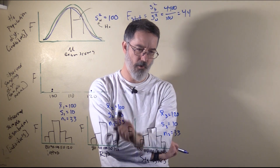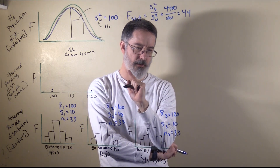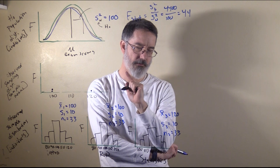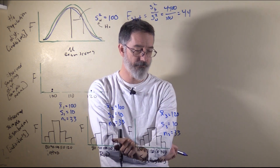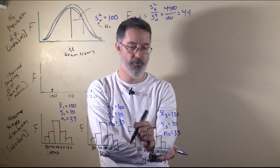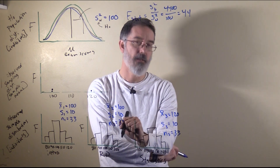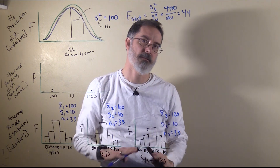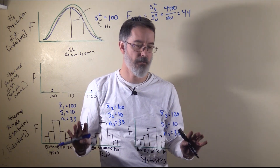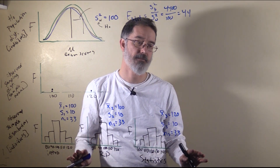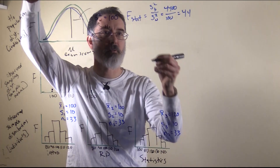When you do ANOVAs, there is another table that your computer program will create for you that summarizes a lot of the key information about your statistical test. It is called a source table.